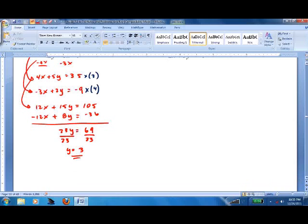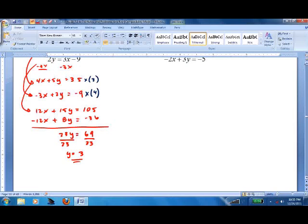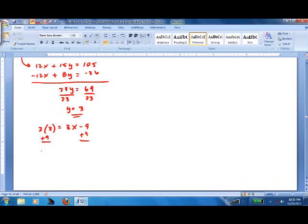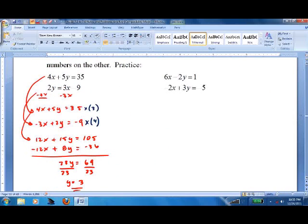Put it back in an equation. The equation is 2y equals 3x minus 9. 2 times y equals 3x minus 9. 6 plus 9 is 15. Divide both sides by 3. x equals 5. So go all the way back up here and we've got 5 comma 3.